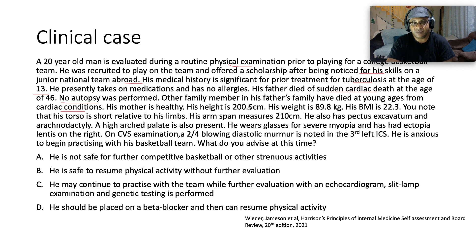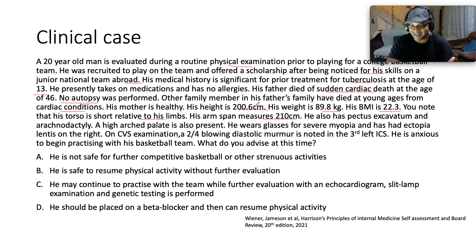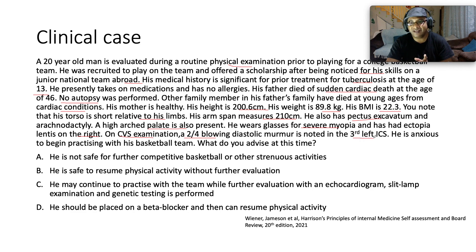His mother is healthy. His height is 200.6 centimeters — quite a tall guy. His weight is 89.8 kilograms and his BMI is 22.3. You notice that his torso is short relative to his limbs — a big tip-off. His arm span measures a whopping 210 centimeters, which is actually greater than his height. He also has pectus excavatum and arachnodactyly. A high arch palate is also present. He wears glasses for severe myopia and has had ectopia lentis on the right. On cardiovascular examination, there is a 2 out of 4 blowing diastolic murmur noted in the third left intercostal space.